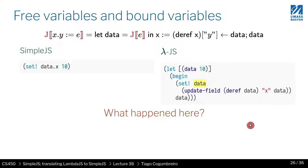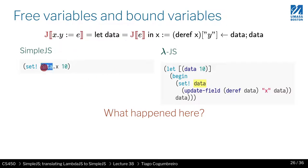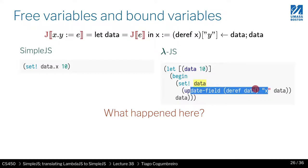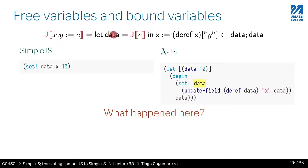There is one problem though, concerning free variables and bound variables. Because we are generating code with a let, in this case we called the variable 'data' — what would happen if my object were also called 'data'? Then you would have a problem, because the generated code would try to set 'data', but by coincidence the translator also generated a variable with that name, and now they refer to the same variable.